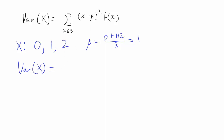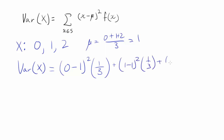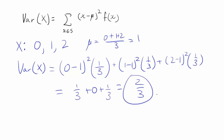The variance is calculated by taking each value, subtracting the mean, squaring it, and multiplying by the probability. Assuming all values are equally likely, each has probability 1/3. So we get: (0 minus 1) squared times 1/3, plus (1 minus 1) squared times 1/3, plus (2 minus 1) squared times 1/3, which gives 1/3 plus 0 plus 1/3, also known as 2/3.